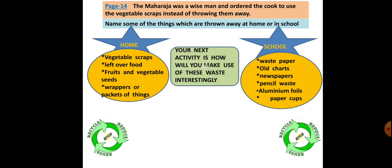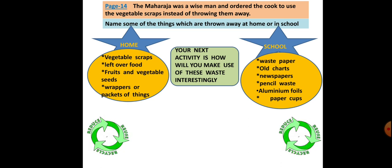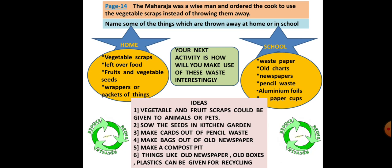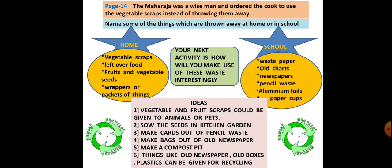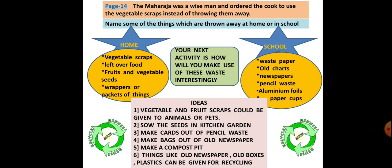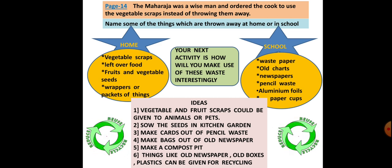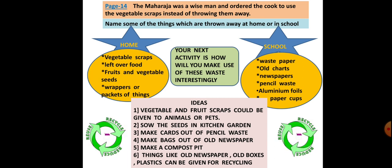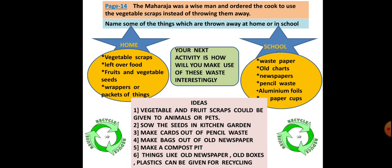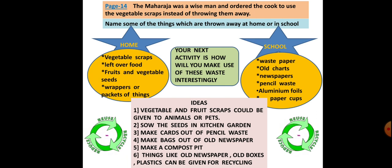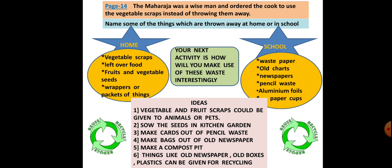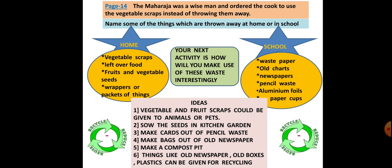The next activity is: how will you make use of these wastes interestingly? Here are some ideas. Vegetable and fruit seeds or scraps could be given to animals or pets. We can sow the seeds in the kitchen garden. Make cards out of pencil waste. Make bags out of old newspaper. Make a compost pit. Things like old newspaper, old boxes, and plastics can be given for recycling. You can have your own ideas and write your own answers — these are only a help to think upon.